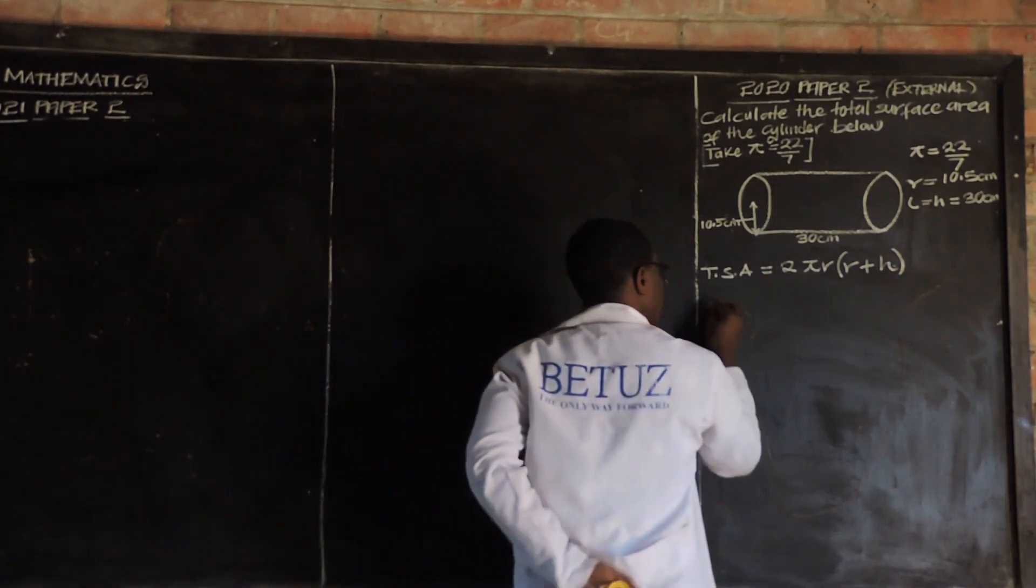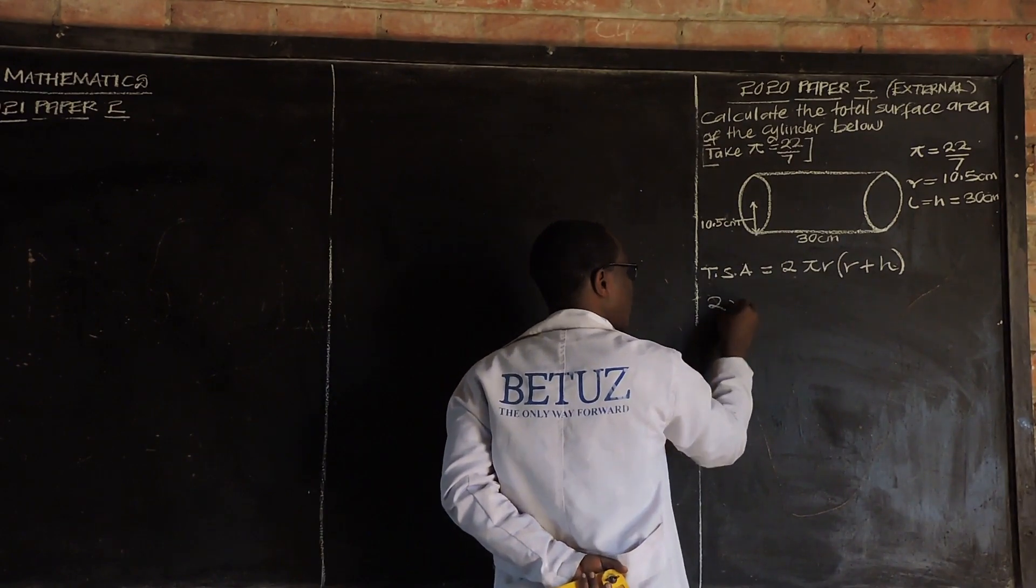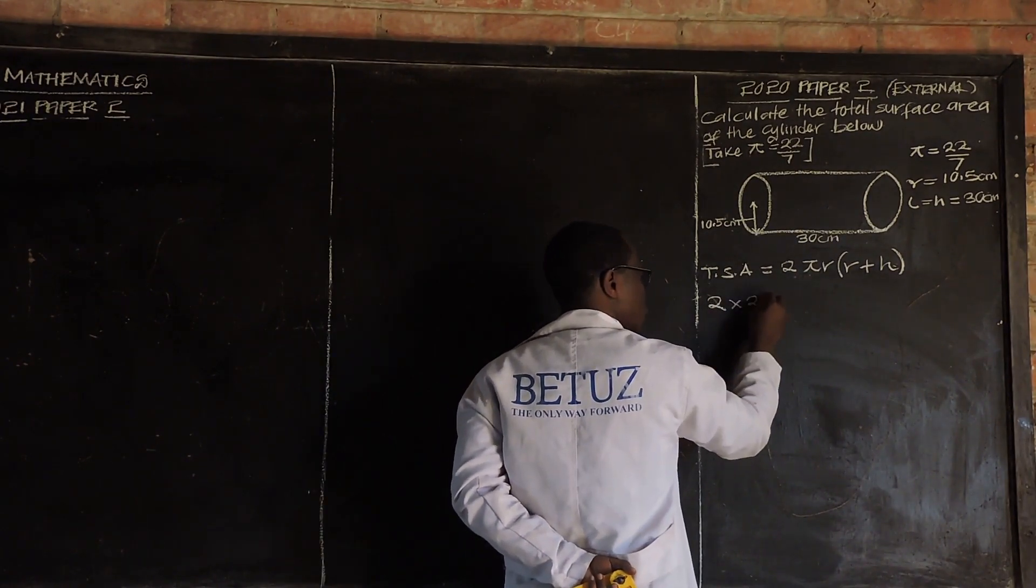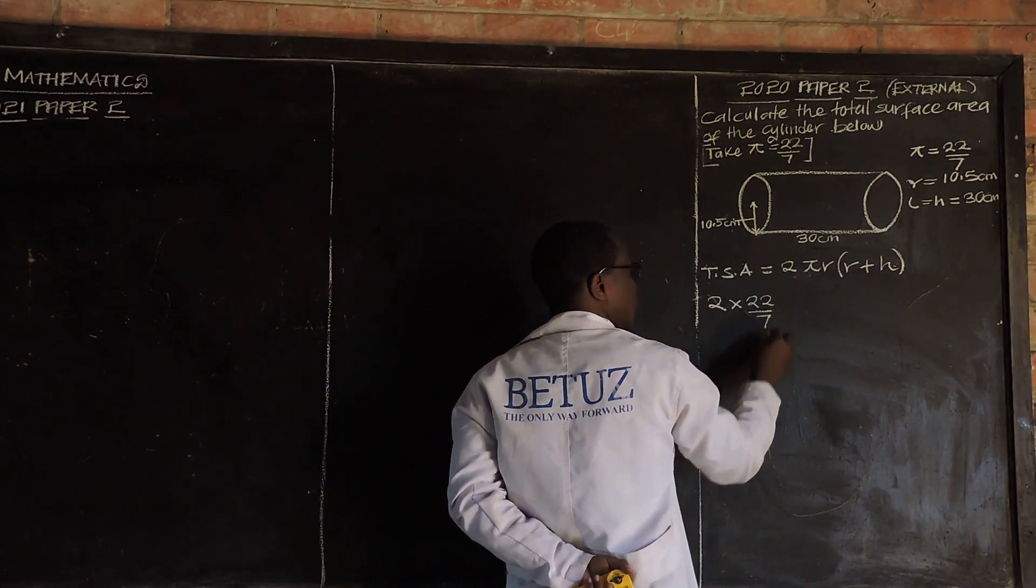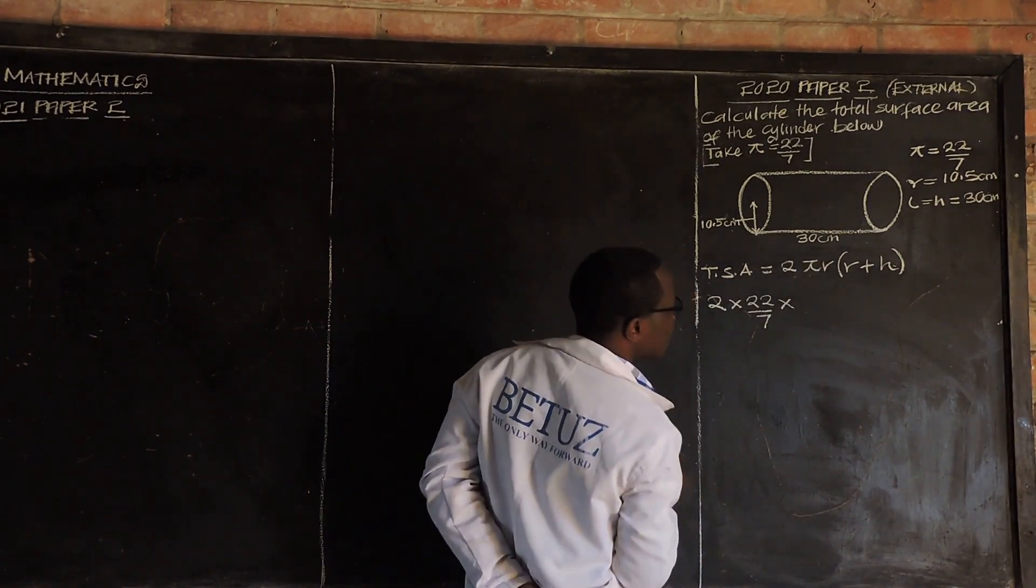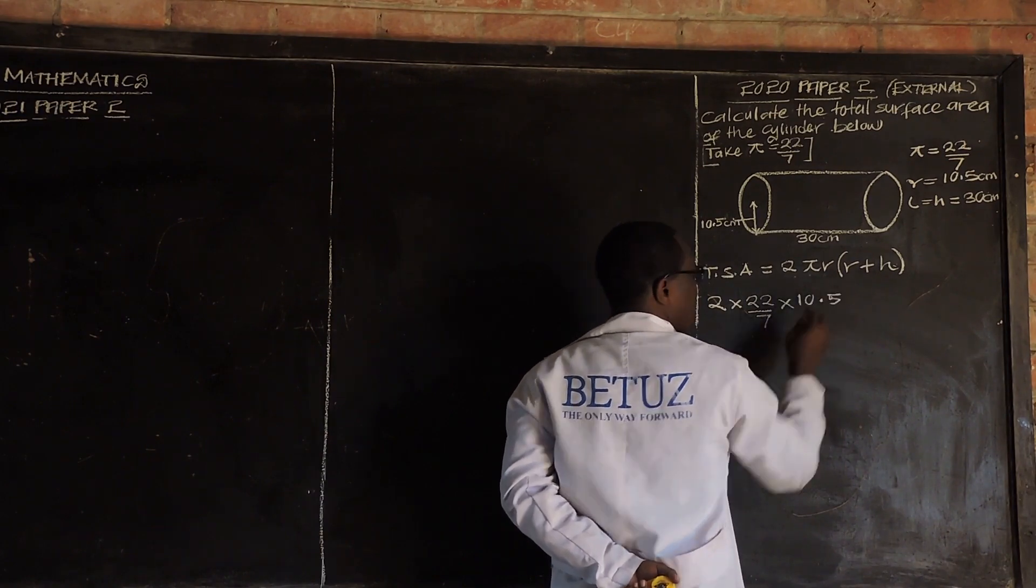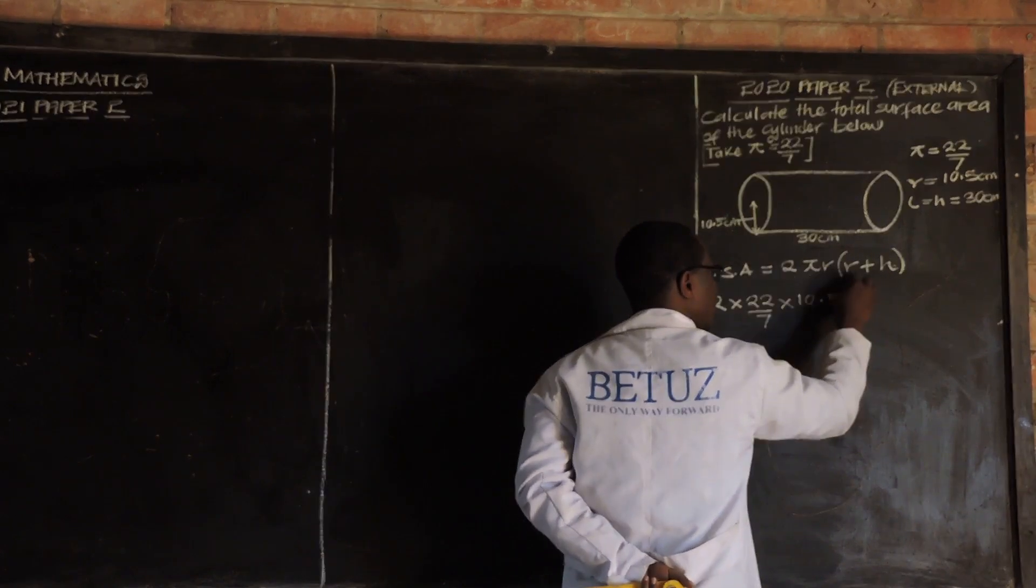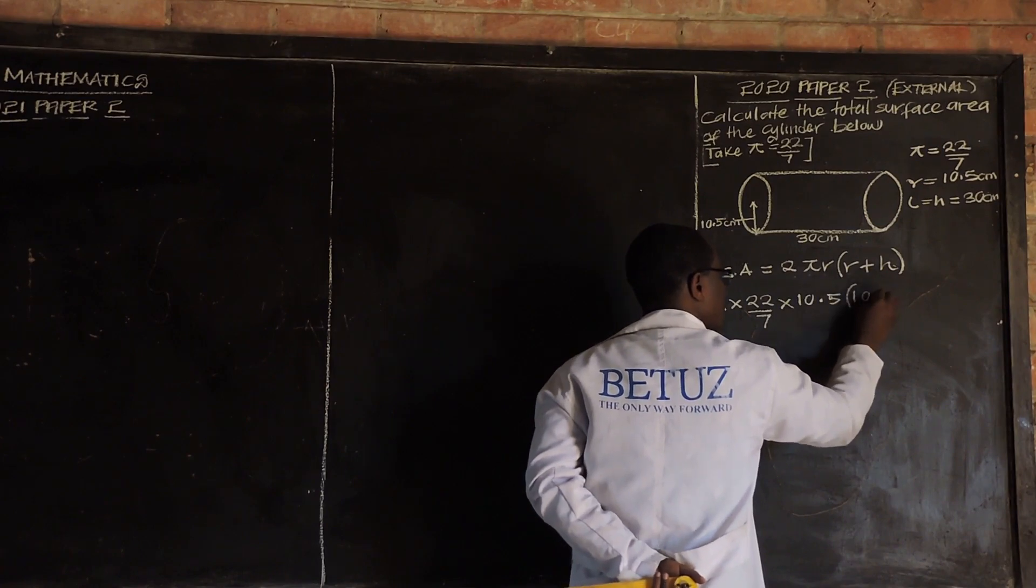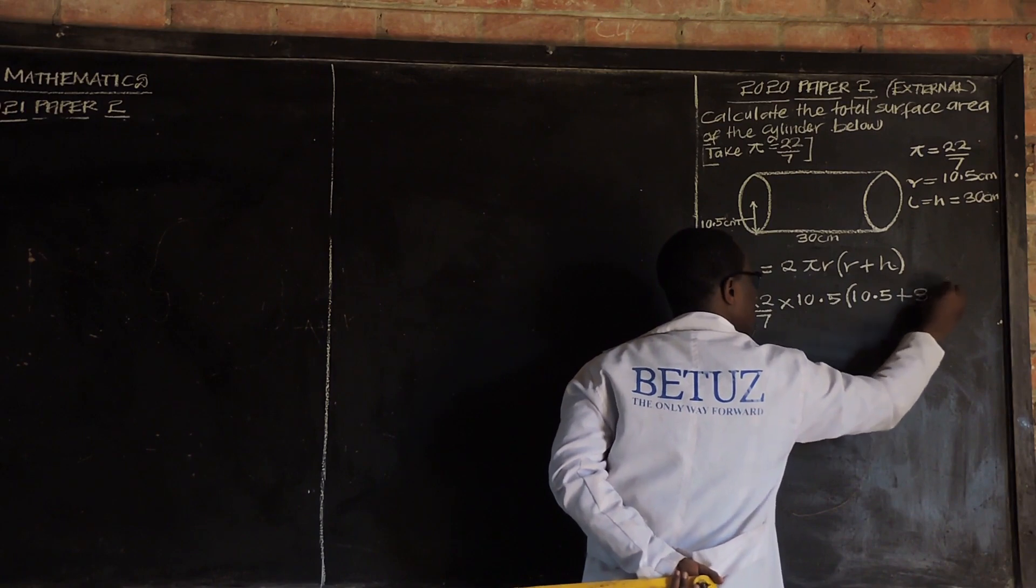What we're going to do is just substitute in the formula. We've been given the π, which is 22 over 7. So, we put 22 over 7. Then, the radius is 10.5 and the height is 30. So, 2 multiplied by 22 over 7, multiply by our radius 10.5, then 10.5 plus our height 30.